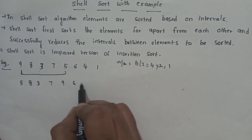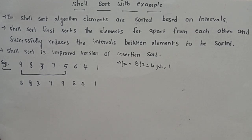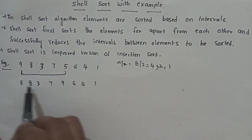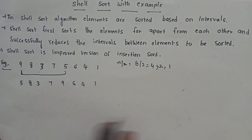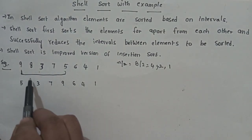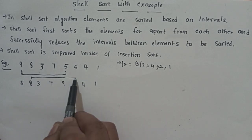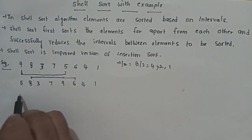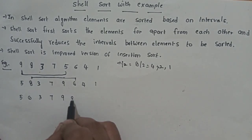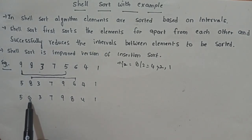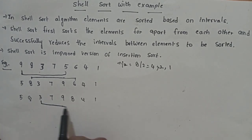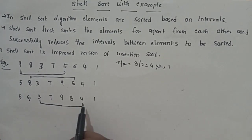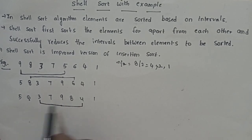After swapping 9 and 5, the array is: 5, 8, 3, 7, 9, 6, 4, 1. Now checking the 4-element gap: comparing 8 and 6 — 6 is less than 8, so we swap. Array becomes: 5, 6, 3, 7, 9, 8, 4, 1. Next, comparing 3 and 4 — 3 is less than 4, no need for swapping.